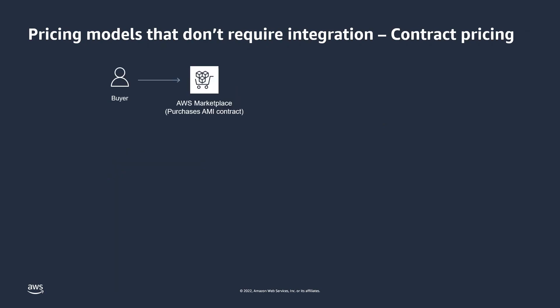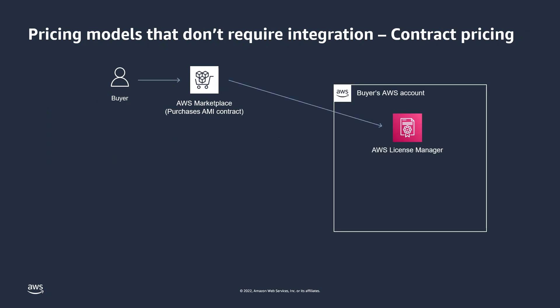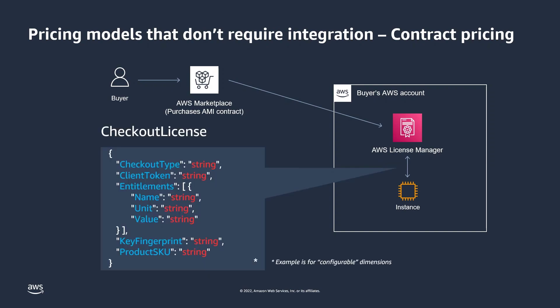The contract pricing model also requires integration. After a contract is finalized, the buyer's upfront entitlements are stored with their AWS account in AWS License Manager. When the buyer launches an EC2 instance from your AMI, the software in your AMI makes a checkout license call to AWS License Manager for confirmation of entitlement before it becomes functional.